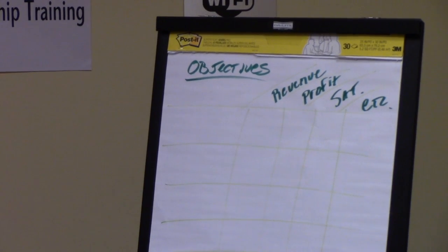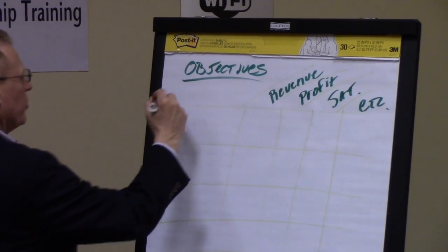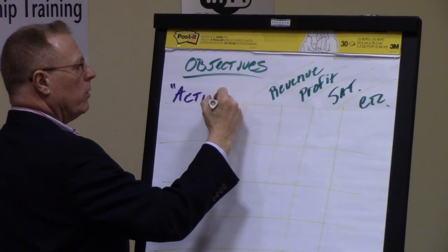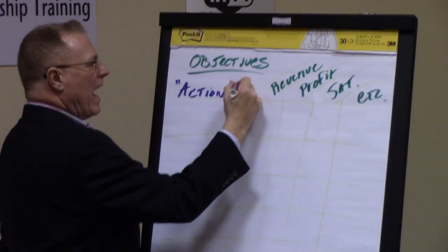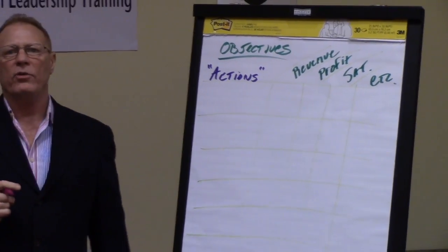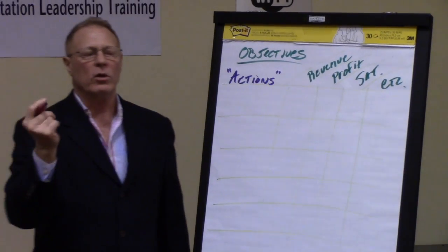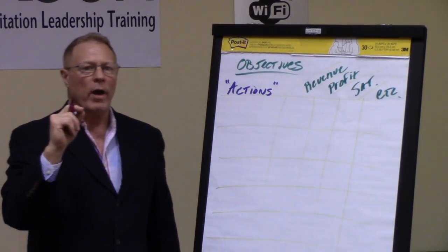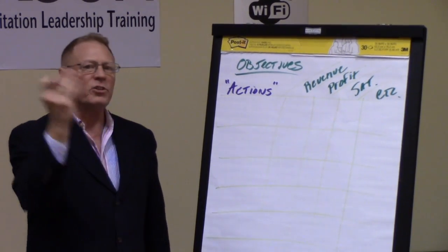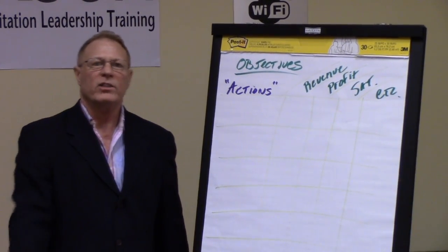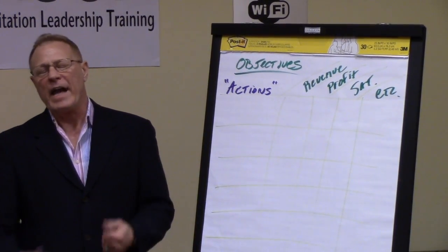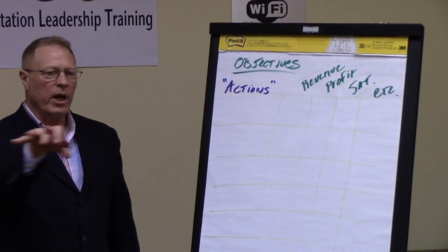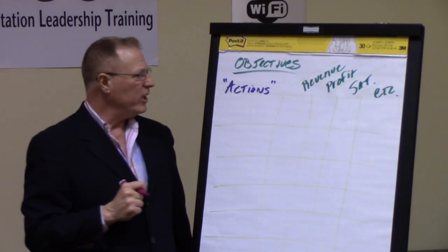Actions can take different terms depending on what level of the organization you're dealing with. Actions taken by an enterprise or business unit might be called strategies, initiatives, or even programs within a program office. The actions might be called projects within a project team, or activities within a project. As facilitators, we don't care, but we need to keep our rhetoric consistent.